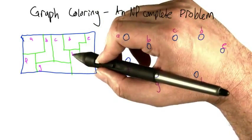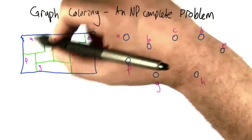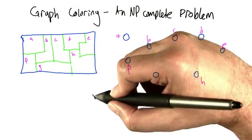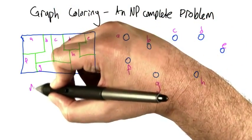Now, in the beginning of this unit, I did a little magic trick having to do with coloring in regions in a map. This problem is sometimes called map coloring.